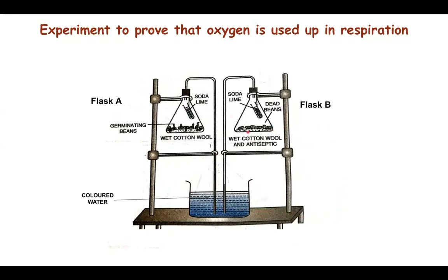Flask B has wet cotton wool with some antiseptic, and on top of the wet cotton wool we place dead boiled bean seeds. Bean seeds, when boiled, become dead, so we cool them and use them. Again, we have a small vial containing soda lime, a single-hole cork, and a bent tube whose other end is inserted in a beaker containing colored water. An antiseptic is used so that no microorganisms grow on the dead bean seeds and interfere with the experiment.